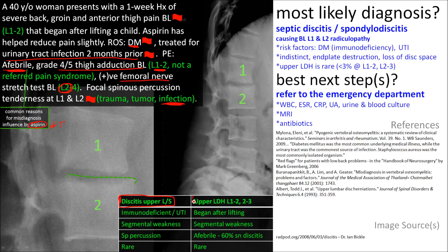The other differential is disc herniation between L1-L2 or L2-L3. Comparing the two: both can present with segmental deficits — weakness, sensory loss, and hyporeflexia — though there's not really a reflex here given the upper lumbar distribution. Her risk factors — diabetes and recent infection — push more toward discitis, as does the spinous percussion tenderness. Both conditions are rare: upper lumbar disc herniation is under 3%, and discitis is uncommon. But considering her risk factors, discitis is the most likely diagnosis.